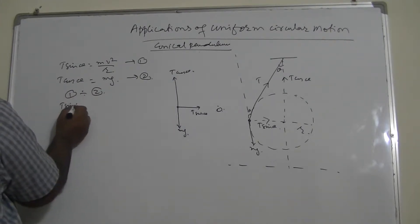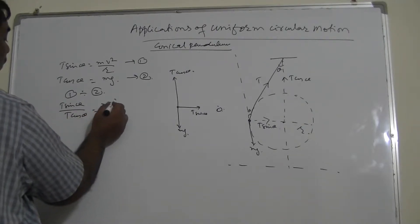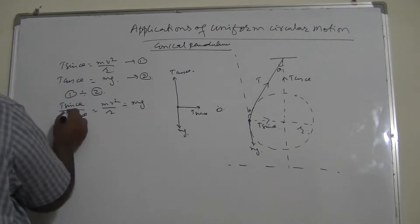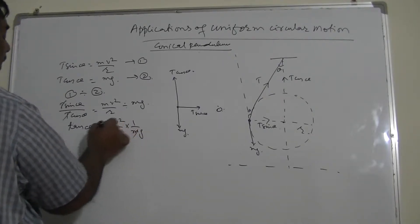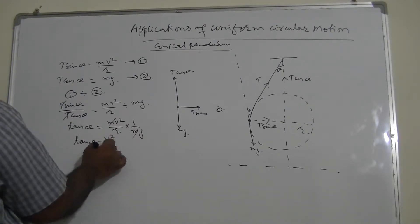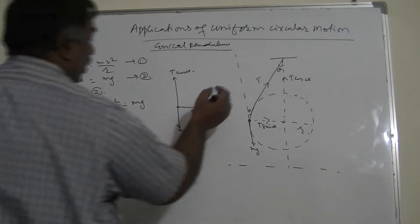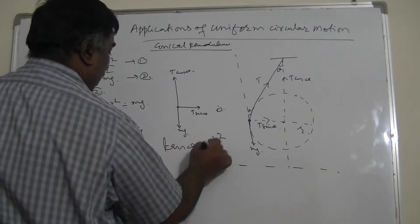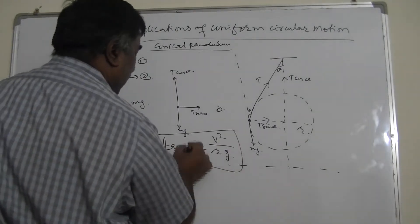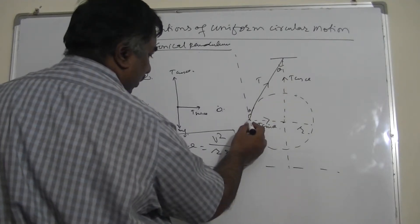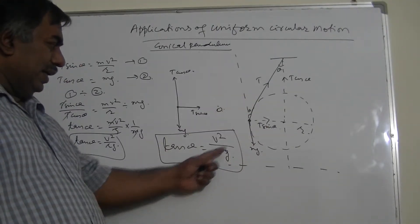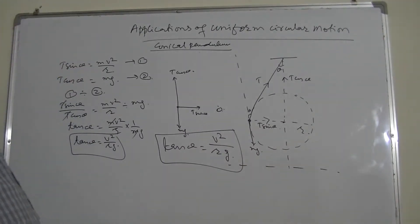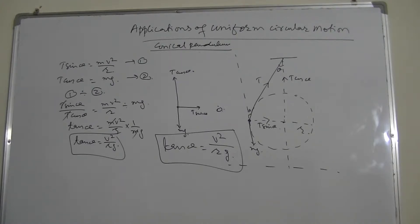Dividing equation 1 by equation 2: T sin theta over T cos theta equals (mv²/r) divided by mg. The T's cancel, giving tangent theta equals mv²/r times 1/mg. The m's cancel, so tangent theta equals v² upon rg. This is the formula for the conical pendulum: tan θ = v²/rg, where theta is the angle the string makes with the vertical, v is the speed of the bob, r is the radius of the circle, and g is acceleration due to gravity.